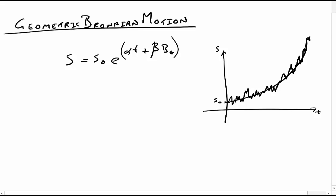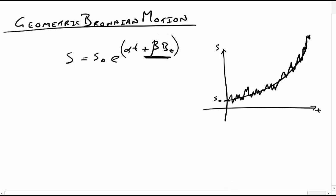So this is an exponential growth, plus this term here which contributes to the Brownian motion — the jaggedness to it. If you just understand that for the time being, that's absolutely fine.